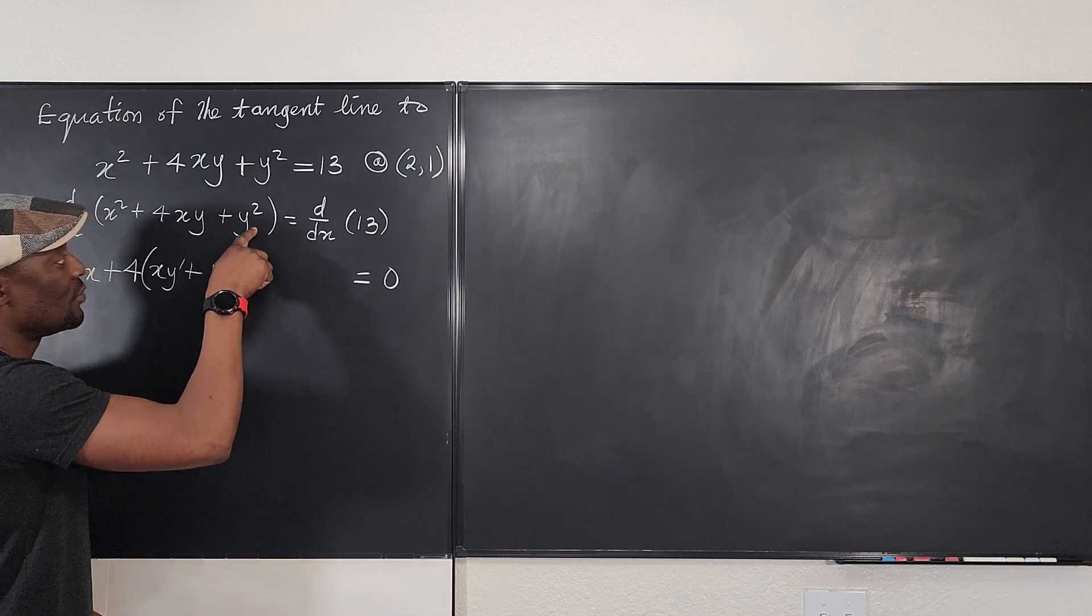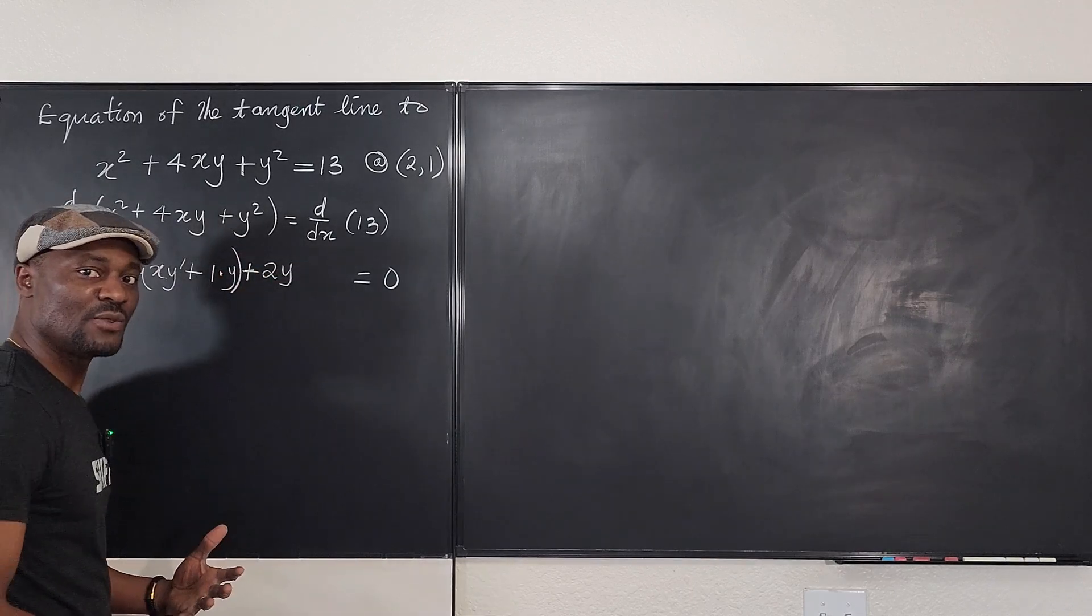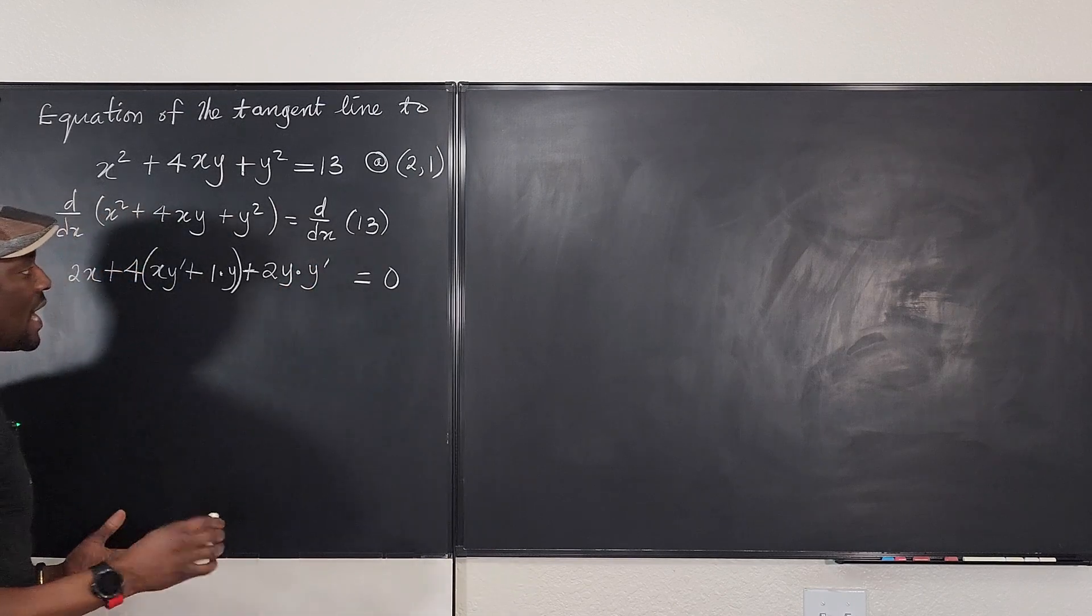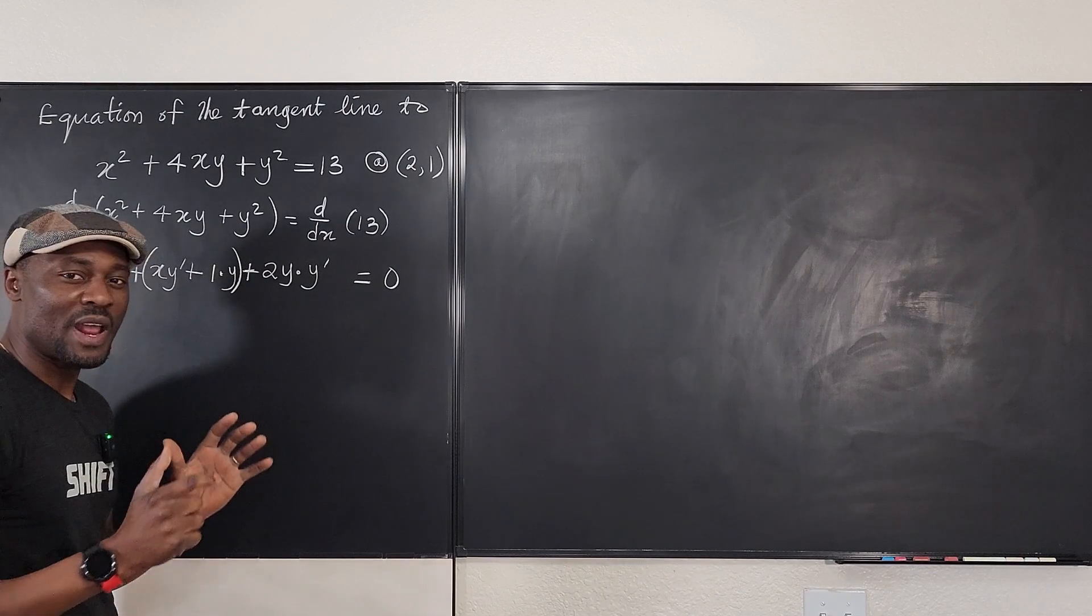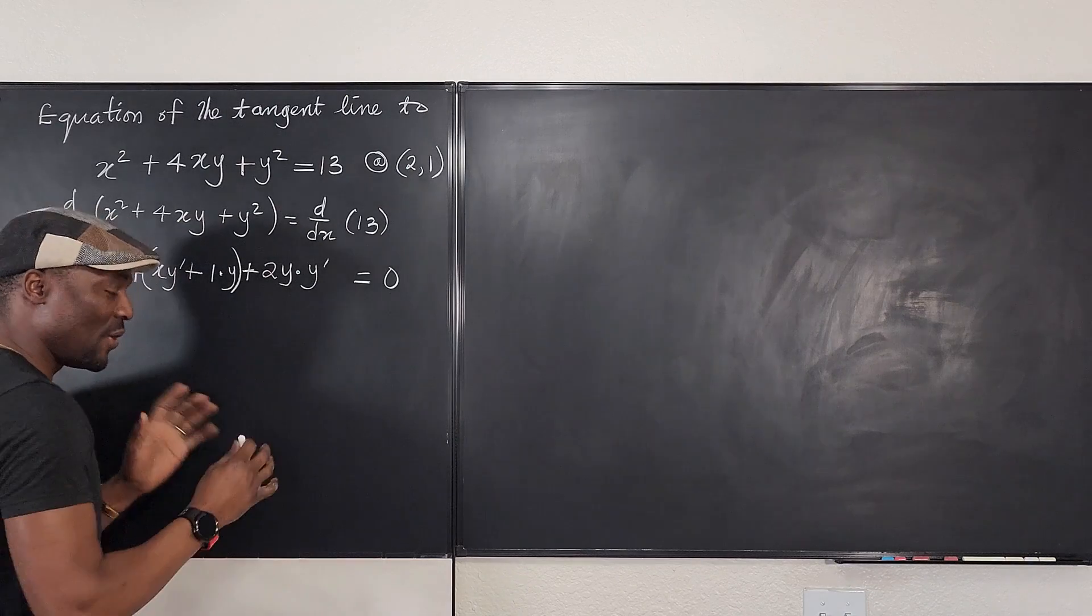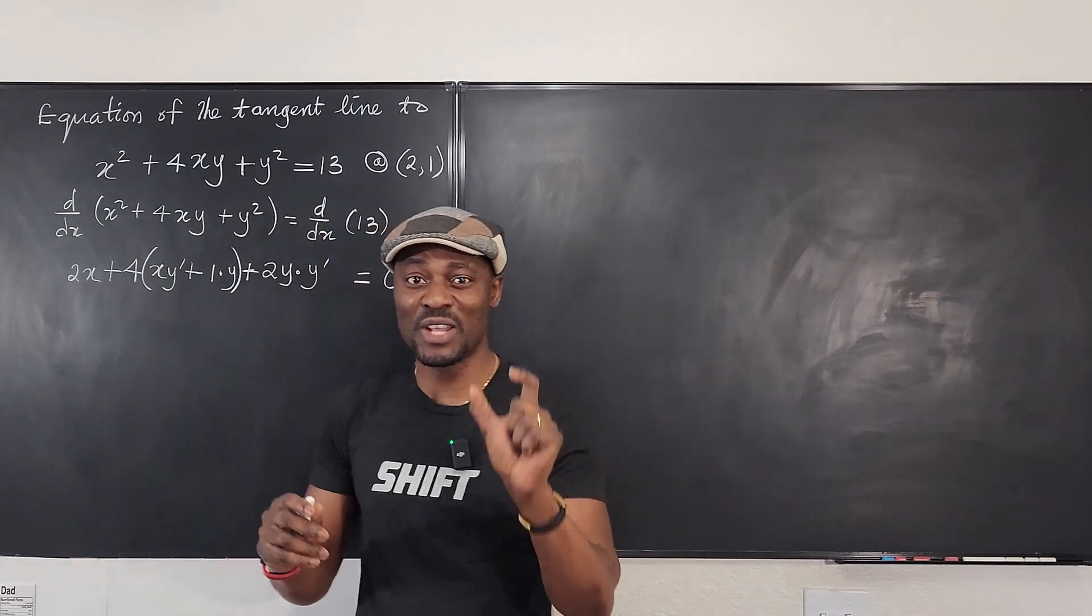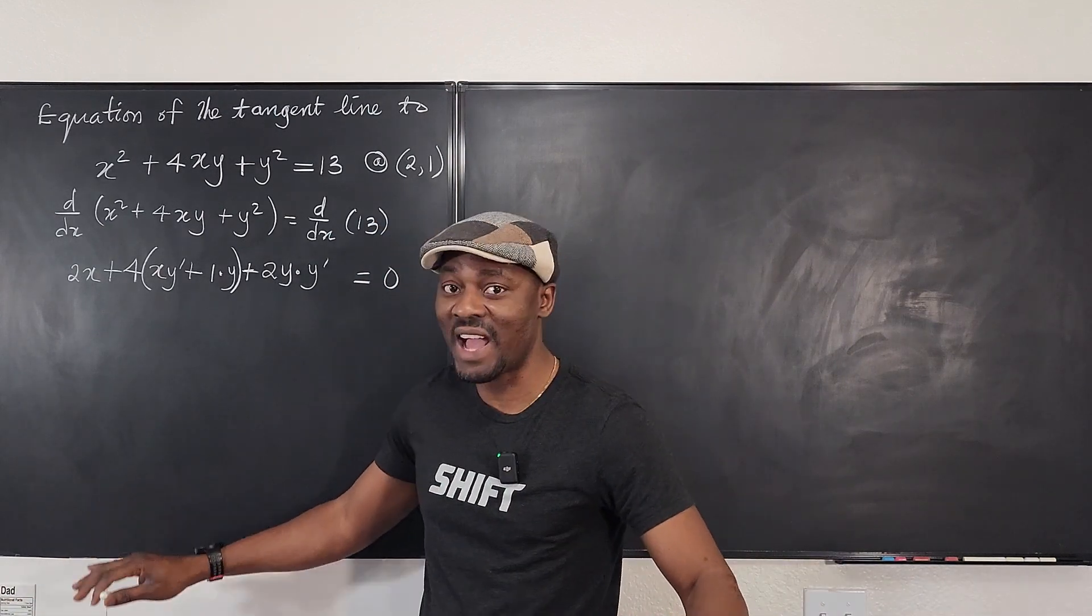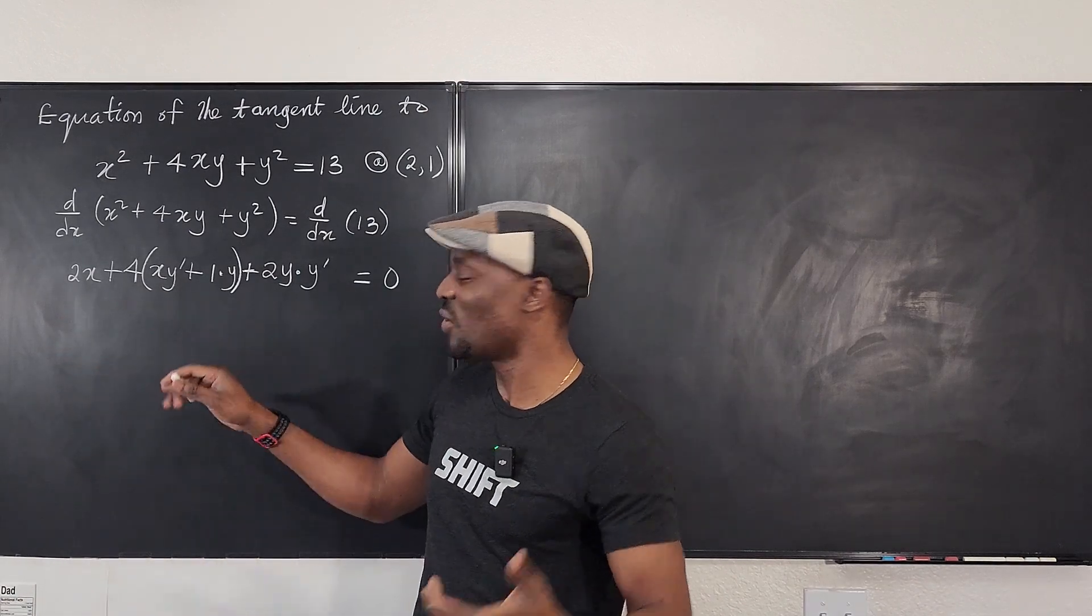And here we're going to have the derivative of this, which is going to be 2y, but we have to apply the chain rule. We have to differentiate the inside, which is y prime. And that's it. Now, should you collect the like terms? I do not recommend that because you're looking for y prime, and I noticed that students often in trying to collect like terms and isolate y prime, that's where they miss out on something. So don't do anything like that. Just leave it the way it is.